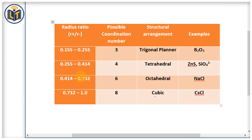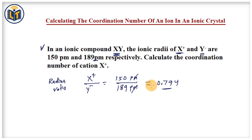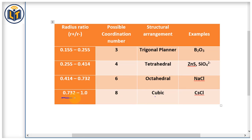Now if we look at this table, in this table you can see that ranges of radius ratio for different structural arrangements of compounds are given here. The radius ratio we got is 0.794, and in this table you can see that 0.794 falls in the range of 0.732 to 1.0 radius ratio. It means that the XY ionic compound is having cubic voids.